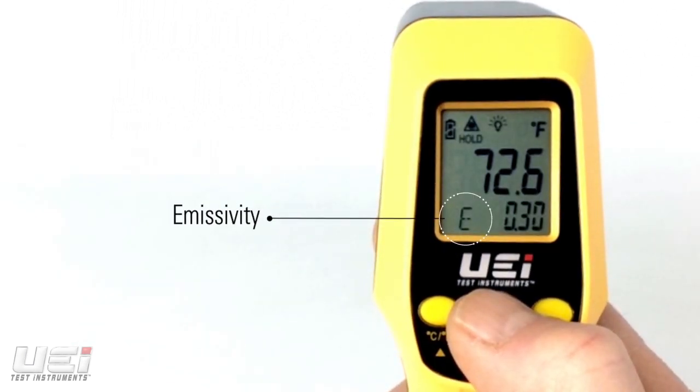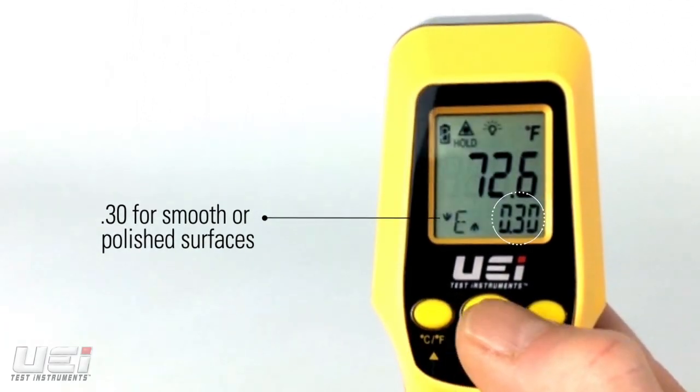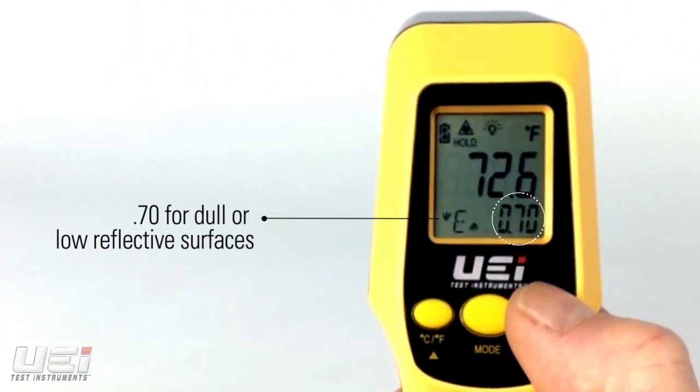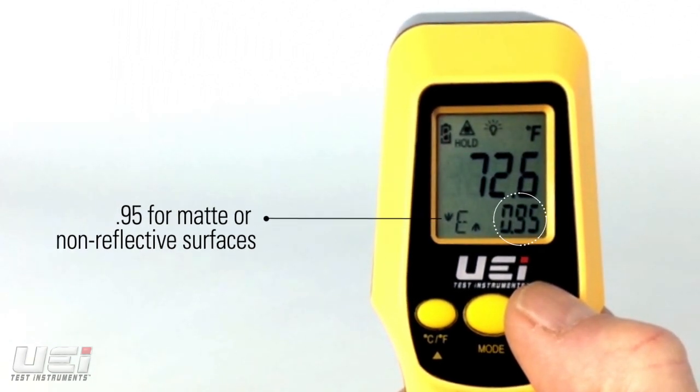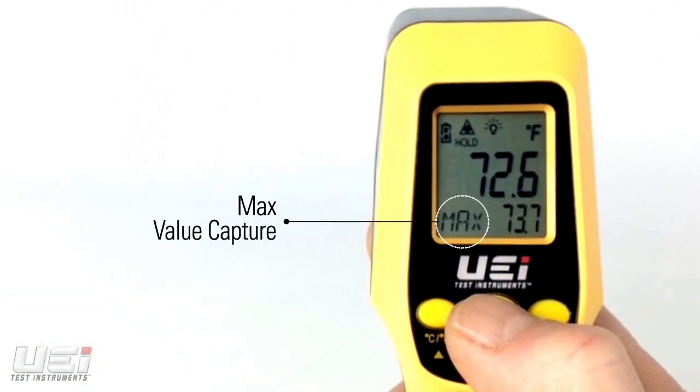With three levels of emissivity: .30 for smooth or polished surfaces, .70 for dull or low reflective surfaces, and .95 for matte and non-reflective surfaces.